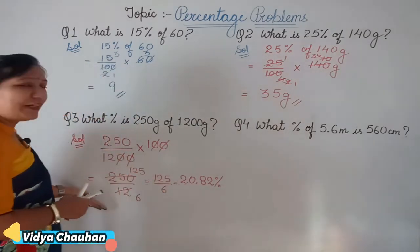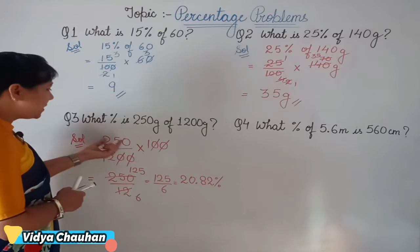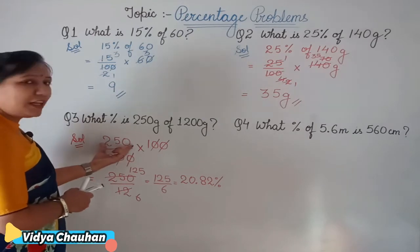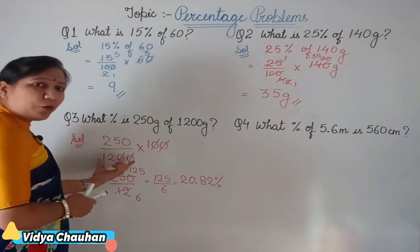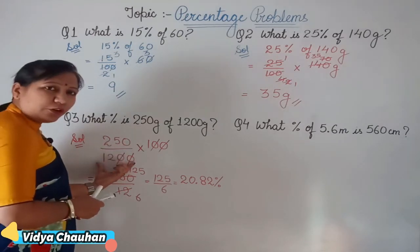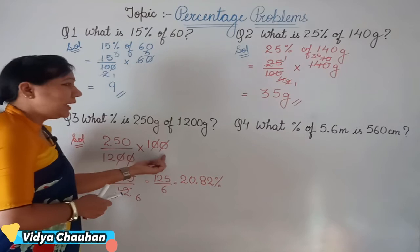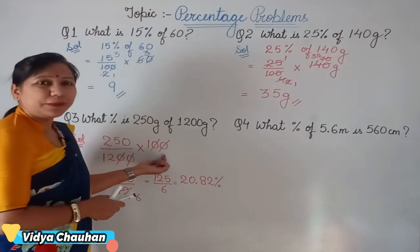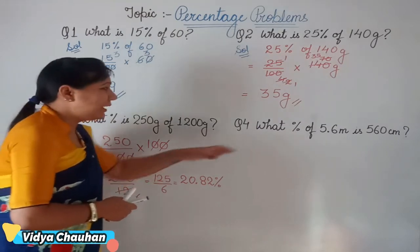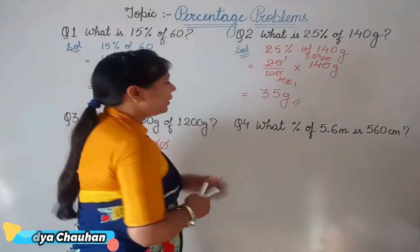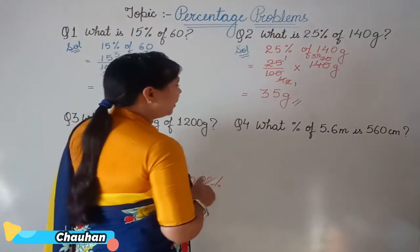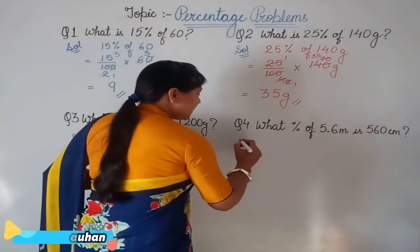So whenever you have to find the percentage: take the smaller value upon the total value and multiply by 100. Let's take one more question from your book exercise.